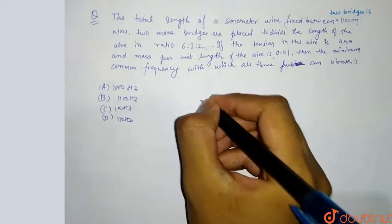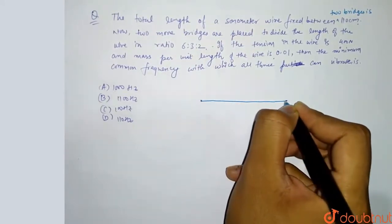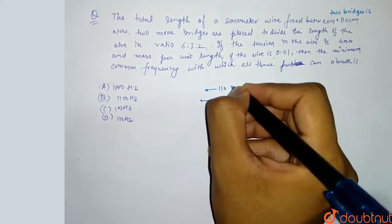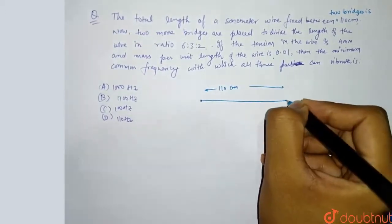Actually, what is it? We have a sonometer wire. We have a length of 110 cm. Now it is a sonometer wire. These two ends are already nodes.